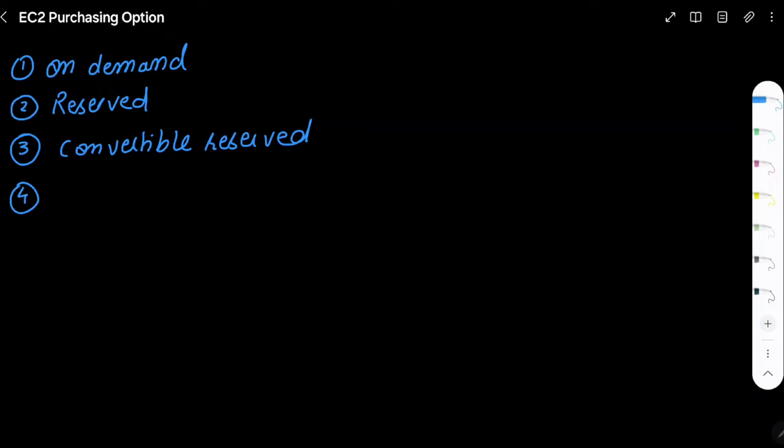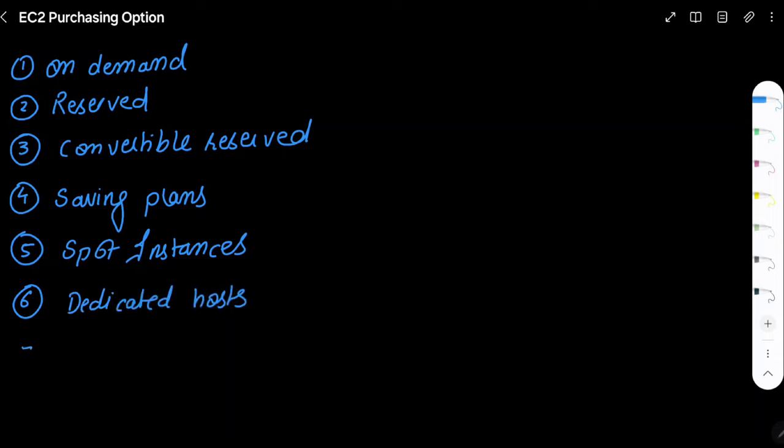The fourth one is saving plans. Fifth one is spot instances. Sixth one is dedicated host. Seventh one is dedicated instances.